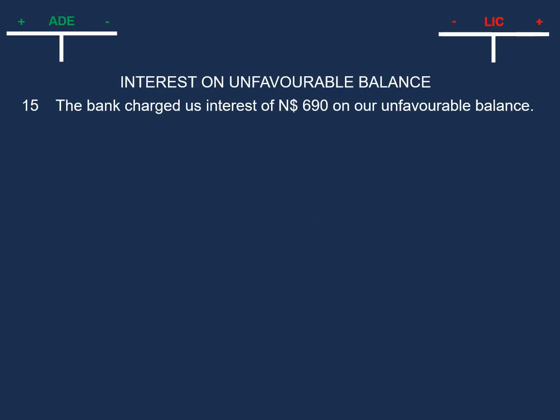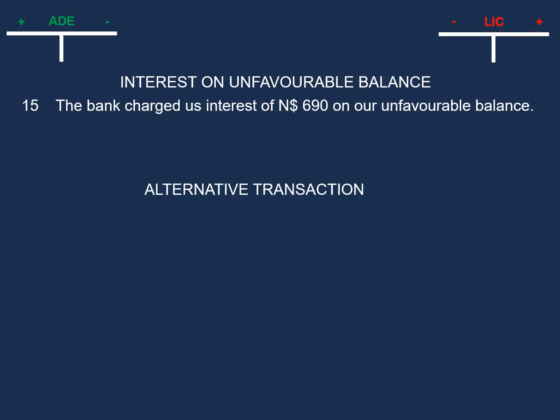On the 15th, the bank charged us interest of $690 on our unfavorable balance. An alternative way to describe this is being charged interest on our debit balance. Remember: a credit balance is a favorable balance, and a debit balance is an unfavorable balance.